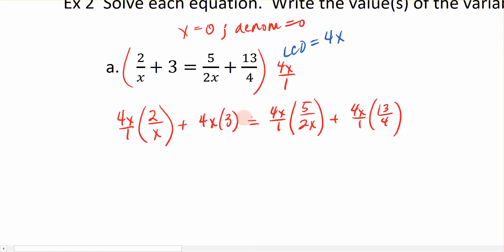So I have my multiplication problem right here. I encourage you to write it out in all of these steps. Don't cheat your steps because you might make a mistake. So what happens when I multiply these two numbers together? This x cancels that x up there, and that leaves me with 4 times 2, which is just 8. Plus 4x times 3 is 12x equals, what happens here? Well, that x cancels that x. This 2 divides into that 4 two times, and that's going to give me 2 times 5, which would be 10. Plus this 4 divides into that 4, leaving me with just x times 13 or 13x.